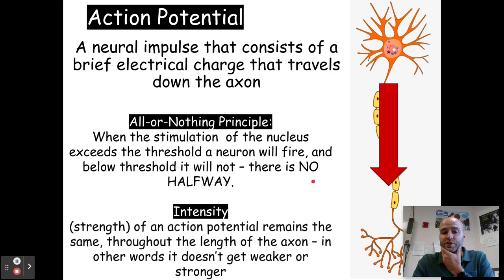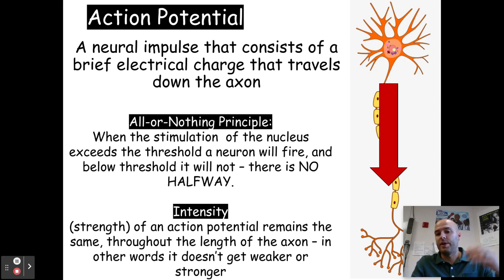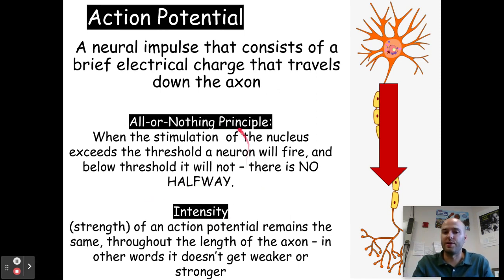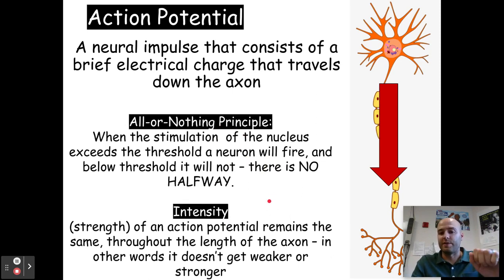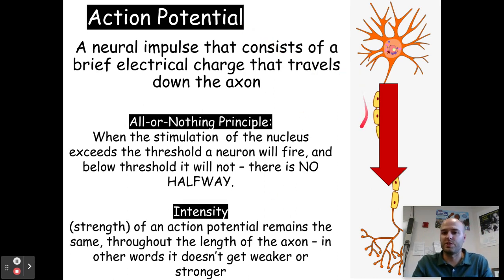Along the same vein, the strength of an action potential remains the same throughout the length of the axon. It doesn't get weaker, it doesn't get stronger. It pushes down through the axon with the same strength and intensity every time, connecting directly to the all-or-nothing principle. If stimulated past the threshold, it will fire with the same intensity every time. If not stimulated past the absolute threshold, the neuron will not fire.